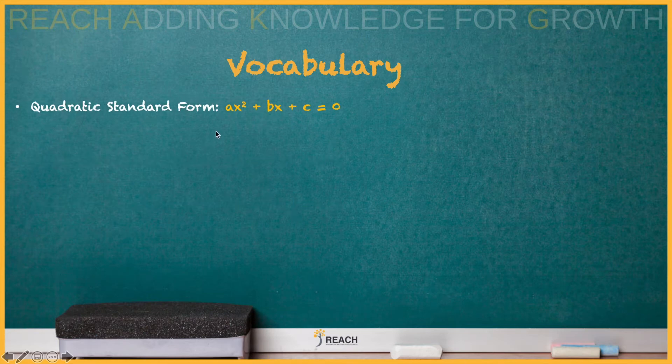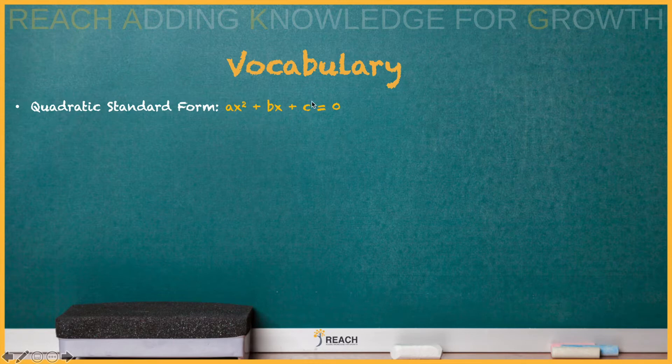Review our standard form: ax² + bx + c = 0. The key thing is equals 0. It's gotta equal 0.